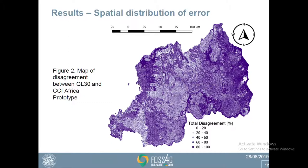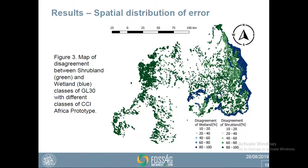This figure shows total disagreement between GL30 and CCI Africa prototype, with stronger patterns on the east side and the northwest side of the map. The darker the color, the stronger the disagreement between the maps. The next map shows disagreement specifically for the two problematic classes — Wetland in blue and Shrubland in green — and we can see strong patterns again on the east and on the west of the map, consistent with the total disagreement map.